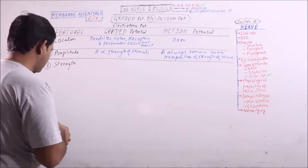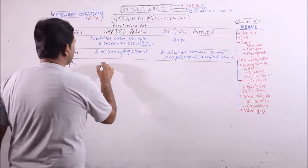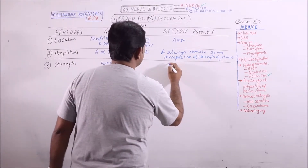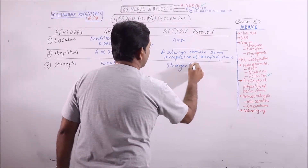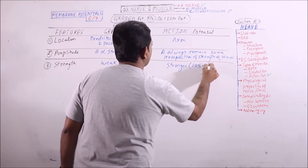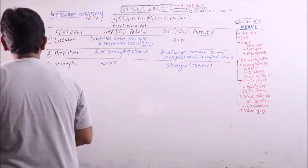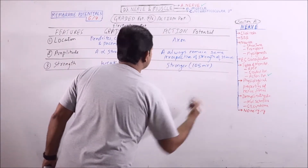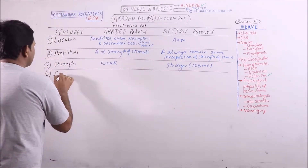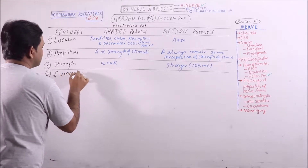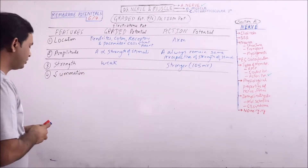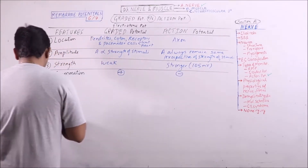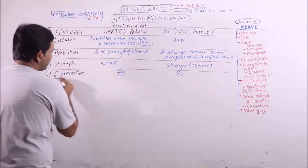Strength. Graded potential is usually of weak strength, while action potential is stronger, having an amplitude of 105 millivolts. Summation can be observed in graded potential, but not in action potential — these cannot be summated.